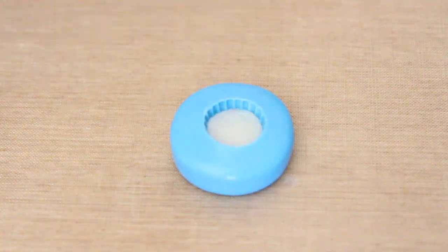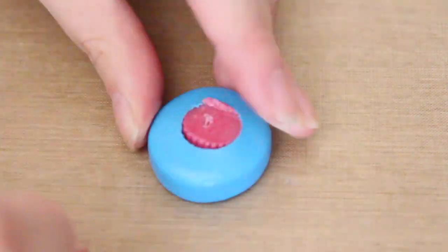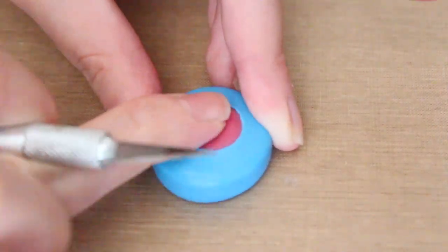And for the rest of the mold that's empty, we're going to add some red translucent clay and then put a ball of red translucent clay on top for the top of the cupcake.